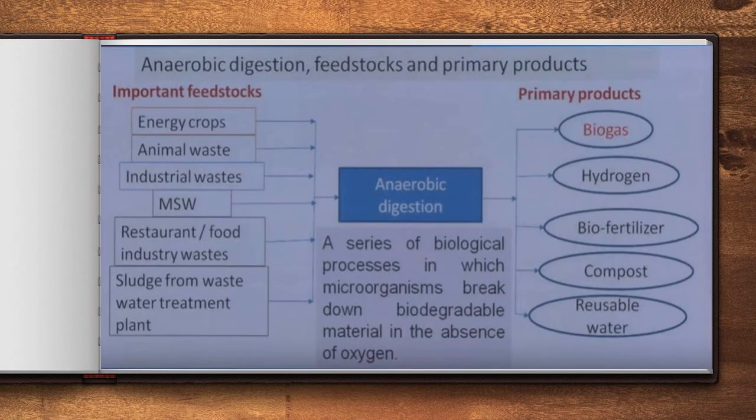The main feedstocks — that is, raw materials — used in anaerobic digestion include energy crops, animal waste, industrial waste, municipal solid waste, and restaurant and food industry waste.